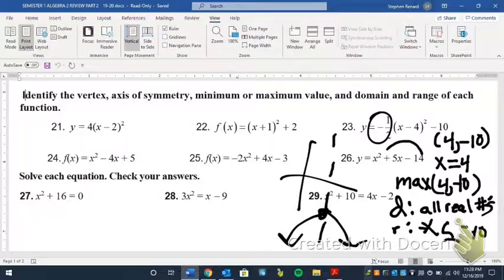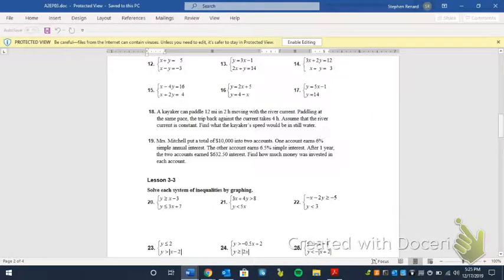One more thing. And that is word problems, which we all love. So hold on just a second. So the problem on the test is similar to number 18 here. Now we did, contrary to popular belief, we actually did problems like this. It was just a while back. It's from chapter 2 or 3, I think. Anyway, this is how it works. So a kayaker can paddle 12 miles in 2 hours moving with river current. Paddling at the same pace, the trip back takes 4 hours. Assume that the river current is constant.